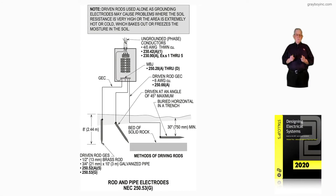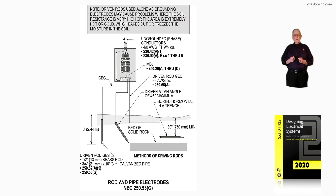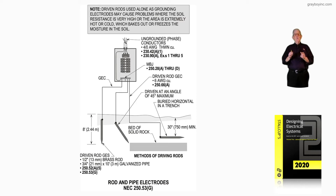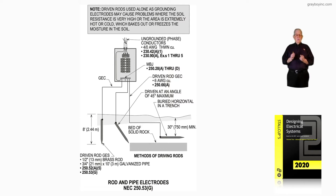This illustration deals with auxiliary grounding electrodes. Let's focus on the motor that is located outside of the building. Notice there's a driven rod driven out there for equal potential plane and also to divert surges that may come down the line. To size this auxiliary grounding electrode, we would review 250.54 of the code.